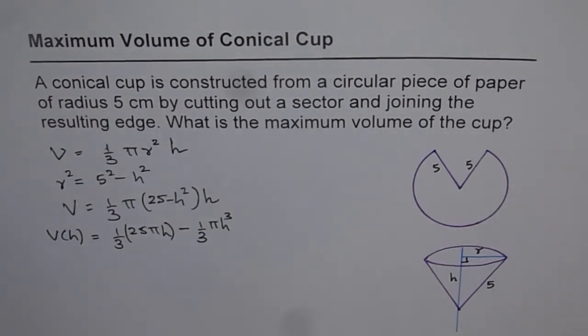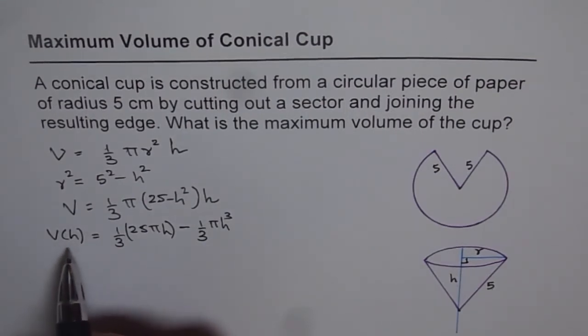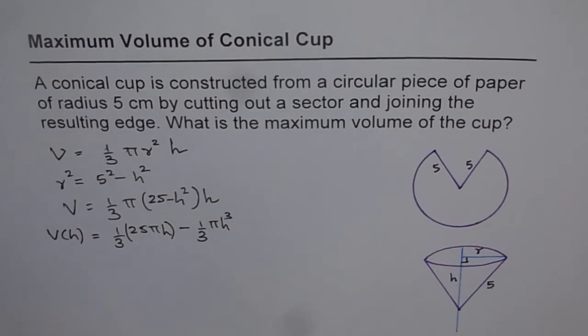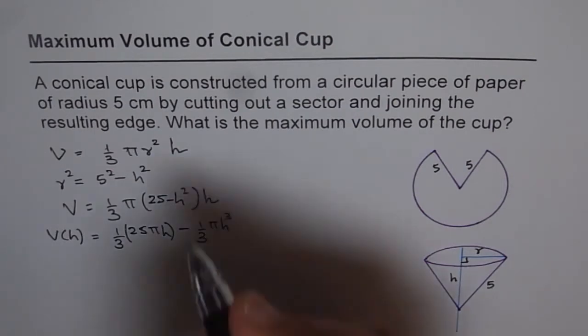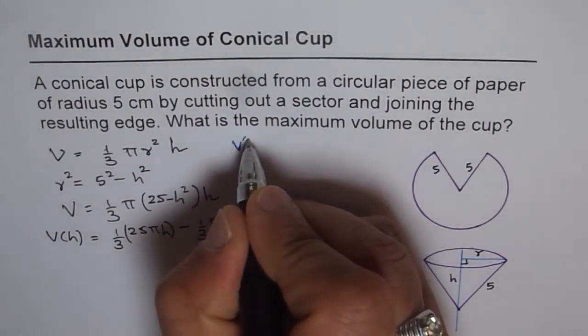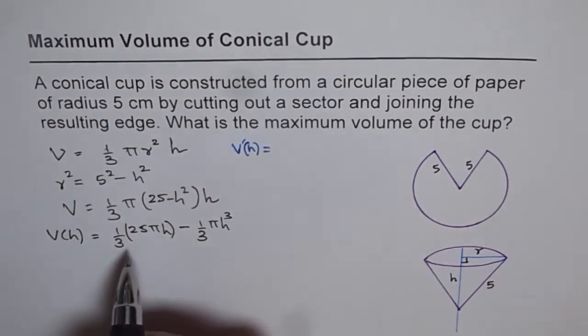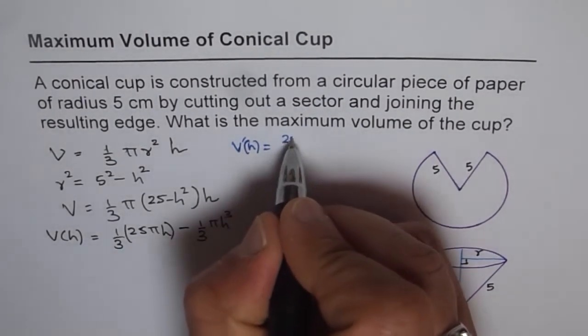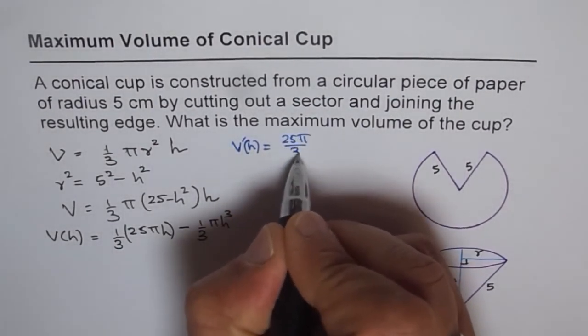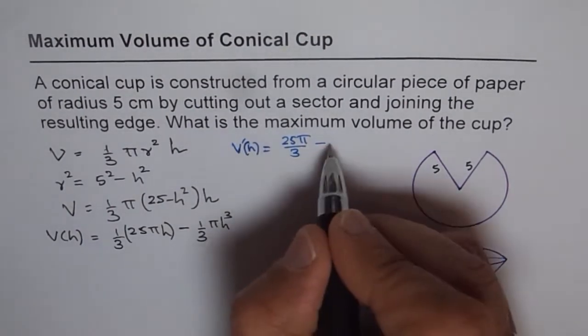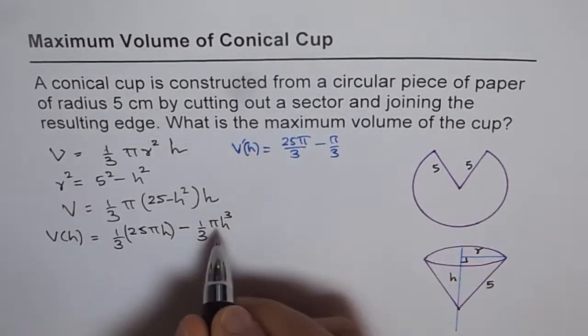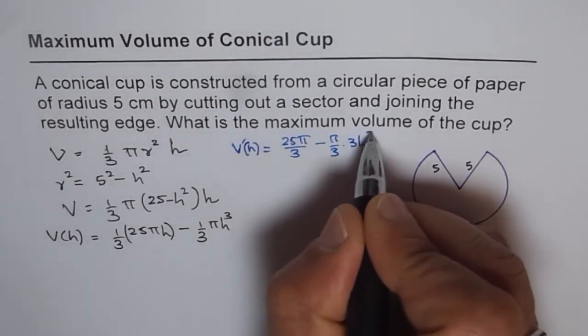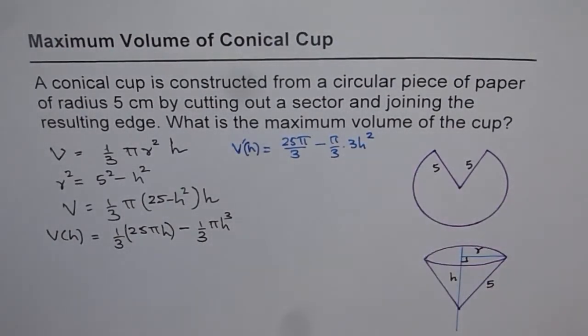Now when we have this, we want to find maximum volume. So the approach is to find derivative of this volume with respect to h and then equate it to 0 to find our critical number. Now let's do it here. So v dash h is equals to, derivative of this function is 25 pi over 3, and derivative of this part will be pi over 3 times 3 h square. So that becomes the derivative of this function.